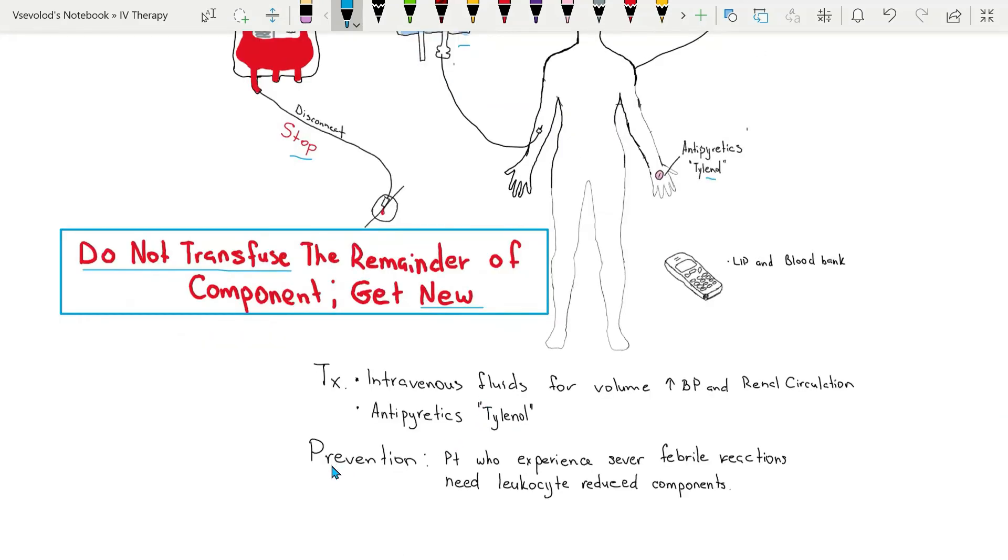In order to prevent this reaction, the febrile non-hemolytic transfusion reaction, patients who experience repeated severe febrile reactions may benefit from leukocyte reduced components and blood components that have been irradiated and leukocytes are inactivated or destroyed.